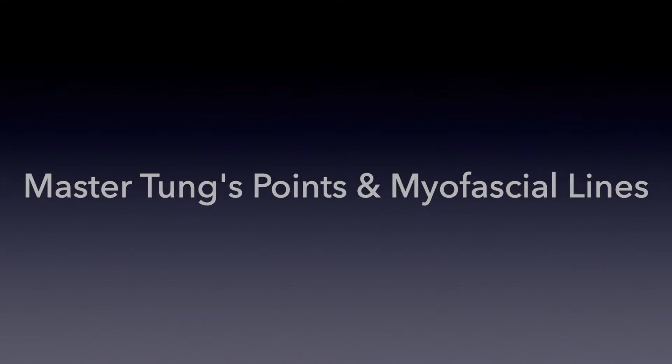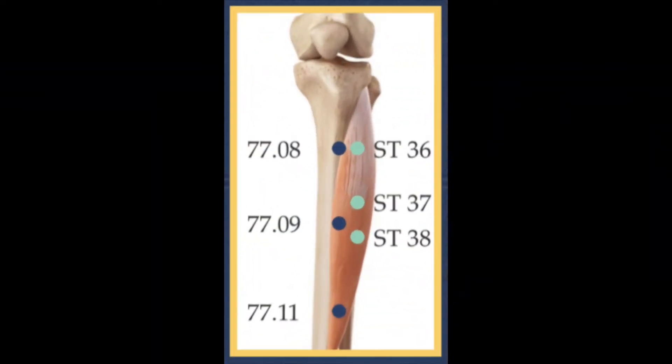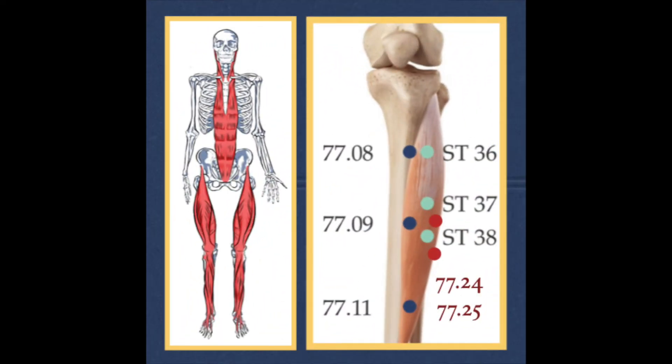Master Dong's points and myofascial lines: the four flowers. Here we see an image of the four flowers next to common stomach points. The four flowers are 77.08, 77.09, and 77.11, and these points as well as the stomach points are on what is known as the superficial front line in myofascial anatomy.